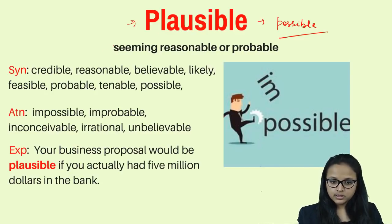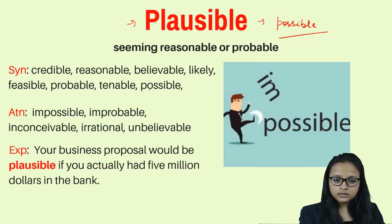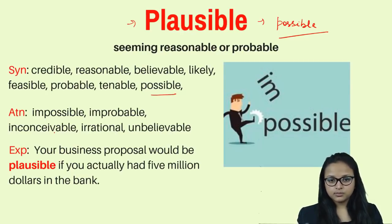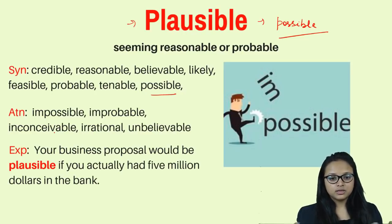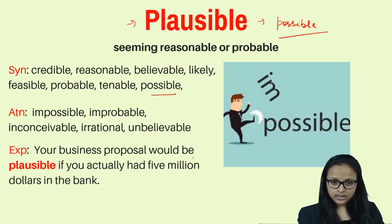Plausible means something that is reasonable, that can happen or be believed. The synonyms are: credible, reasonable, believable, feasible, probable, tenable, and possible. For antonyms, we have: impossible, inconceivable, irrational, and unbelievable.